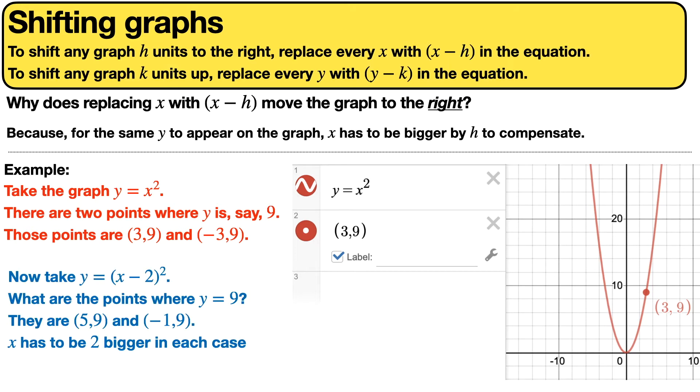Now suppose we have a second graph, y = (x-2)². And suppose we wanted to get the same y value of 9. In order to get the same y value, the numbers that we would have to plug in for x are 5 and -1, so we get the points (5,9) and (-1,9). In other words, x has to be 2 bigger than they were for the previous graph that we're shifting.